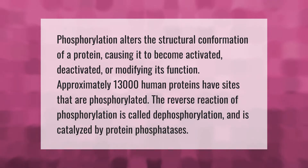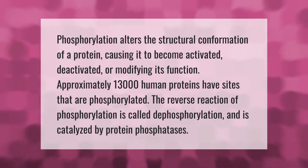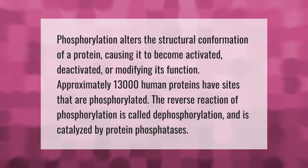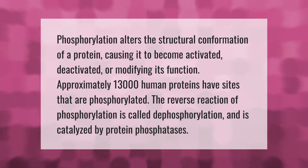Phosphorylation alters the structural conformation of a protein, causing it to become activated, deactivated, or modifying its function. Approximately 13,000 human proteins have sites that are phosphorylated. The reverse reaction of phosphorylation is called dephosphorylation and is catalyzed by protein phosphatases.